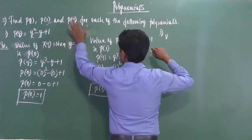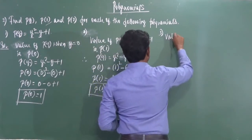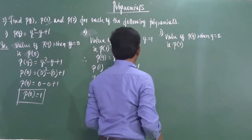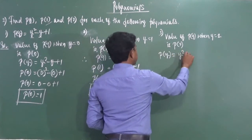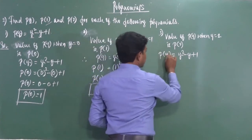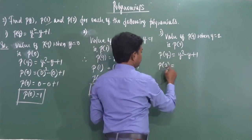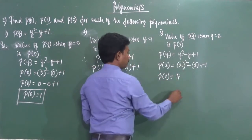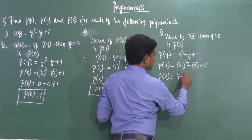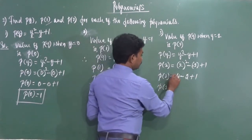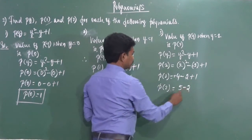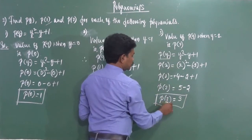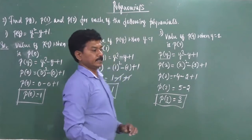Value of P of y when y equals 2 is P of 2. P of y equals y squared minus y plus 1. Replace y by 2: P of 2 equals 2 squared minus 2 plus 1, which equals 4 minus 2 plus 1. That gives 4 plus 1 minus 2, which is 5 minus 2 equals 3. The value of the polynomial P of y when y equals 2 is 3.